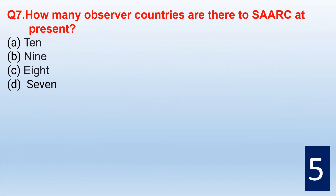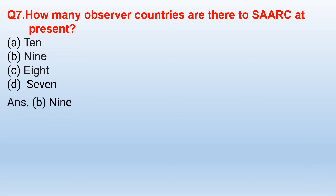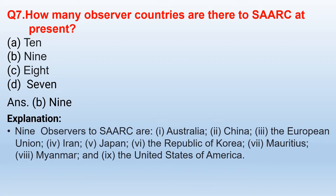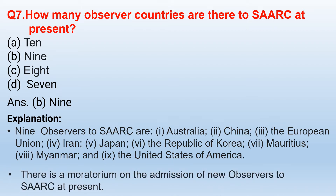How many observer countries are there to SAARC at present? The correct option is option B — 9. The 9 observers to SAARC are Australia, China, the European Union, Iran, Japan, the Republic of Korea, Mauritius, Myanmar, and the United States of America. There is a moratorium on the admission of new observers to SAARC at present.